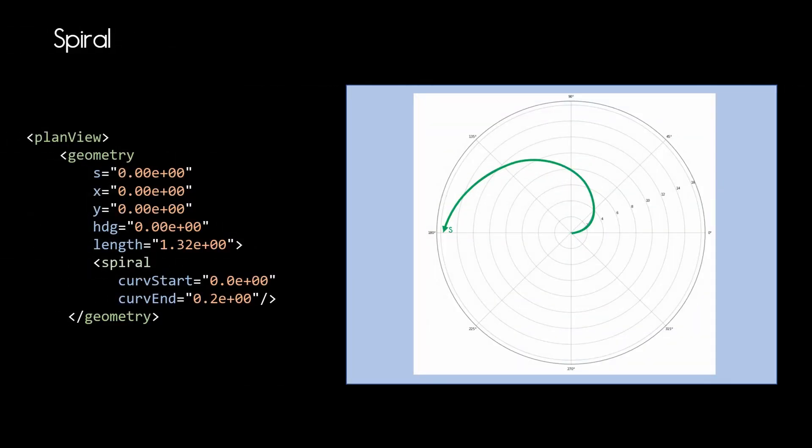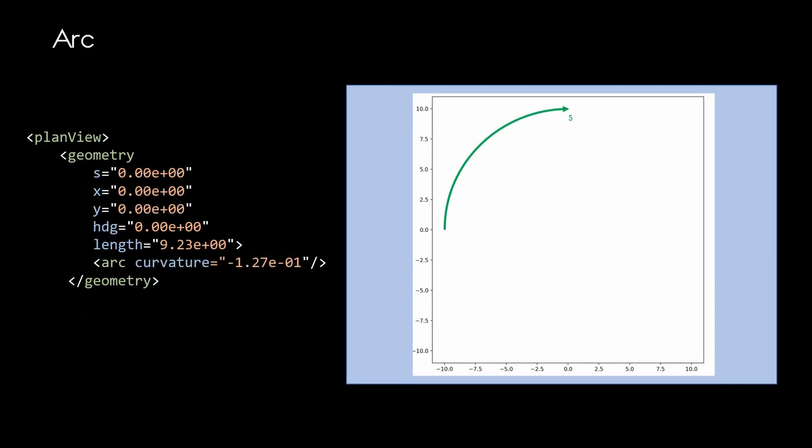The spiral has a change in curvature, so you need to define how the curvature changes by specifying a start and an end curvature. In OpenDrive the curvature change is linear — that is very important. In addition you again have the attributes s, x, y, heading, and length. The arc has a constant curvature and therefore the steering angle when driving on this part will not change. To define an arc you specify s, x, y, heading, length, and a curvature value within the arc element.